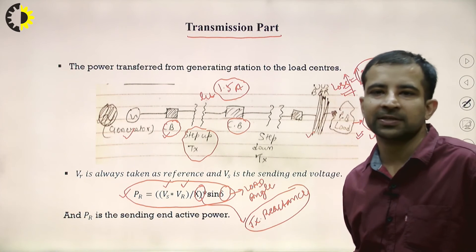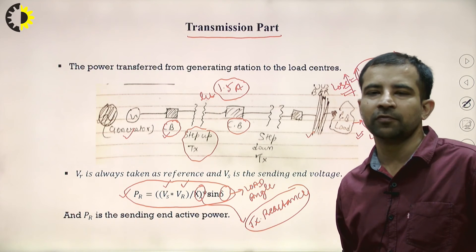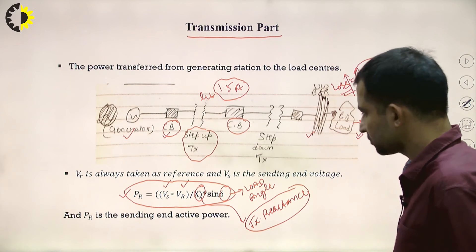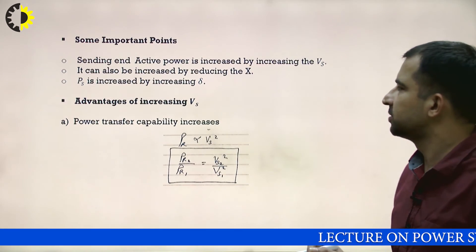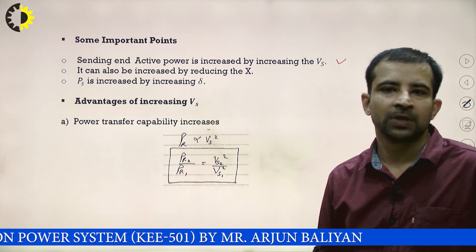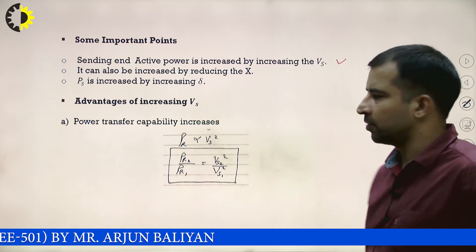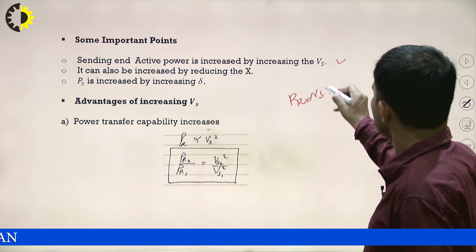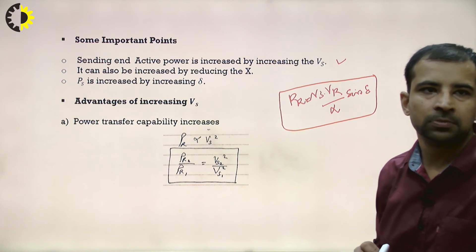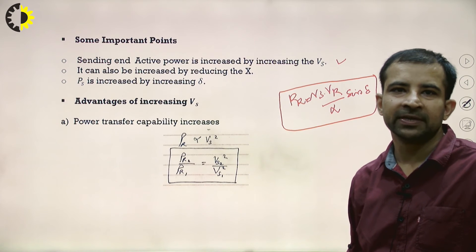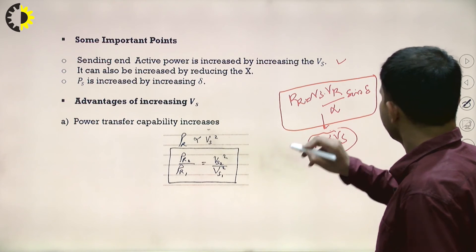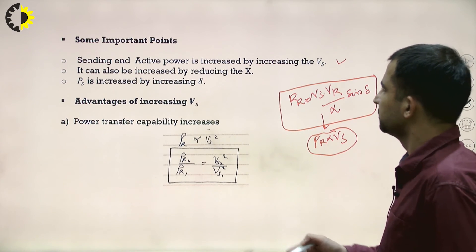Some important points about this equation: sending-end active power increases by increasing Vs, since PR is directly proportional to Vs. From the equation PR = Vs·Vr·sin δ / X, if you increase Vs, the receiving-end power also increases. The basic concept is that whatever power is generated at the sending end, the same must reach the consumer.